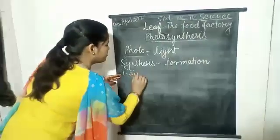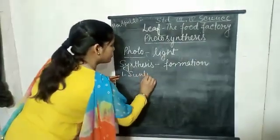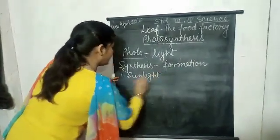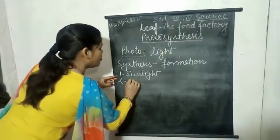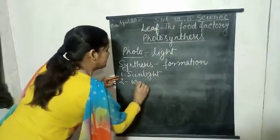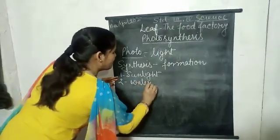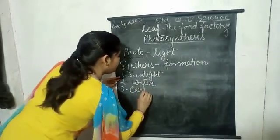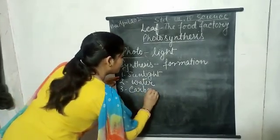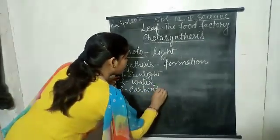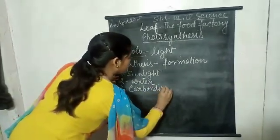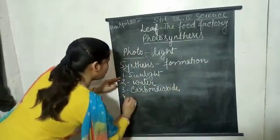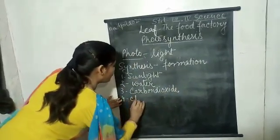Number one: sunlight. Number two: water. Number three: carbon dioxide. And number four: chlorophyll.